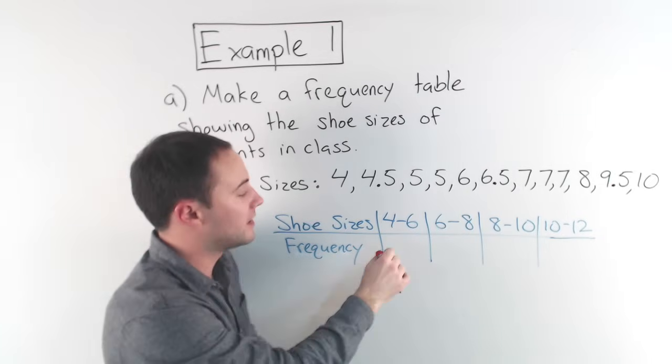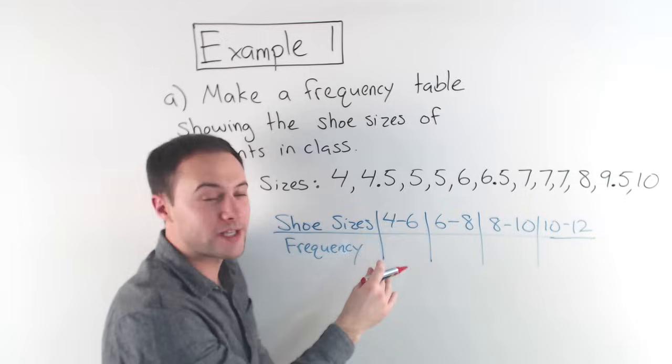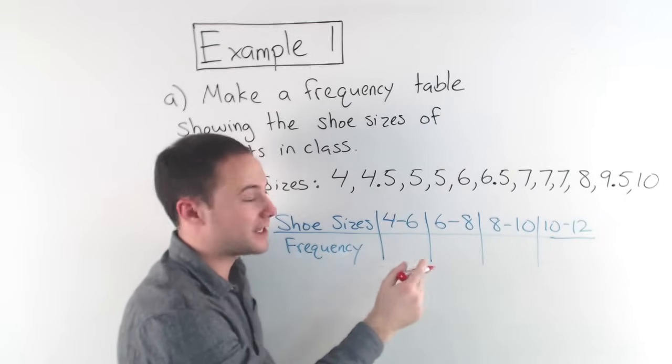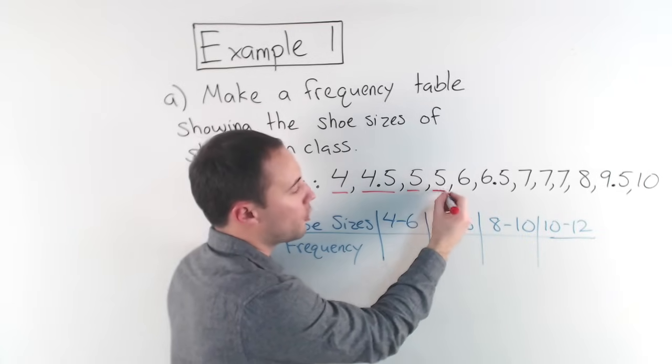So now all I need to do is find out the frequency of my data values in each of these intervals. So I just count. So let's see, from four to six, how many students had shoe sizes between four and six? Well, here's one, four, two, three, four.